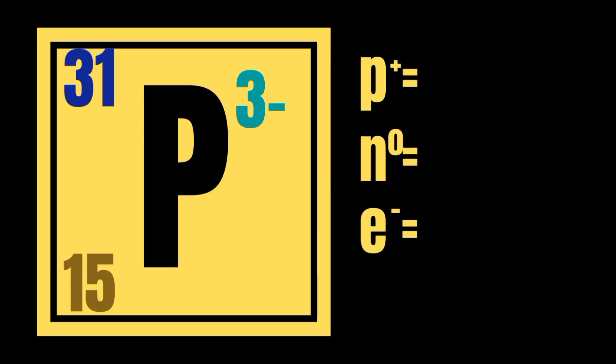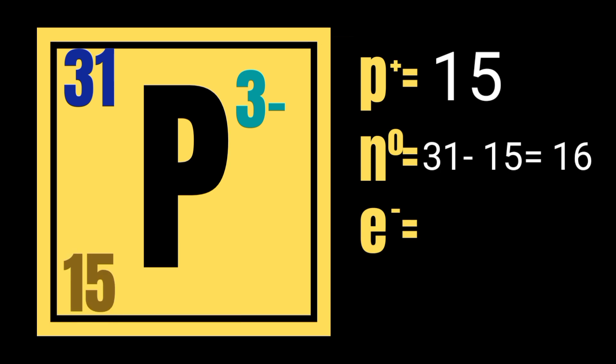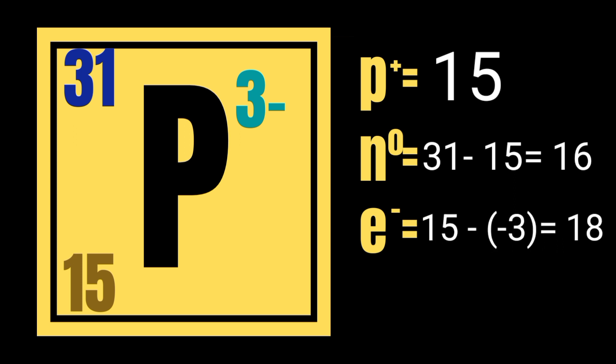Let's have another example: the phosphorus ion. The atomic number of phosphorus is 15 with a mass number of 31. Since the atomic number equals the number of protons, protons is 15. To get the number of neutrons, subtract the atomic number from the mass number: 31 minus 15 equals 16 neutrons. For electrons, electrons equal the atomic number minus the charge: 15 minus negative 3 equals 18 electrons.